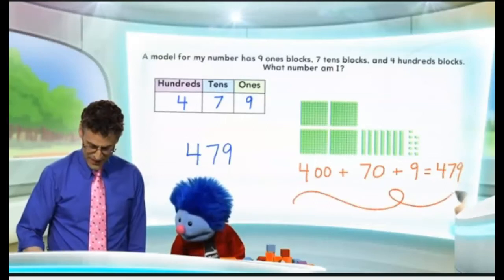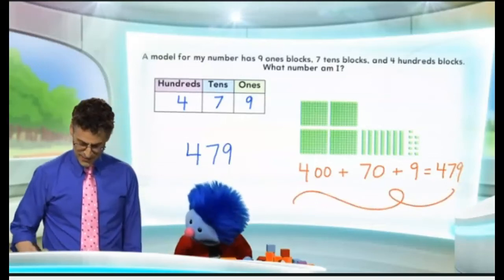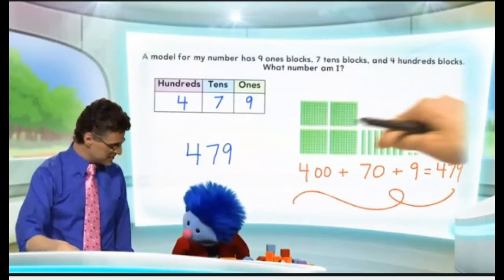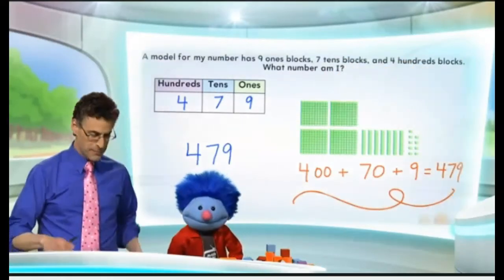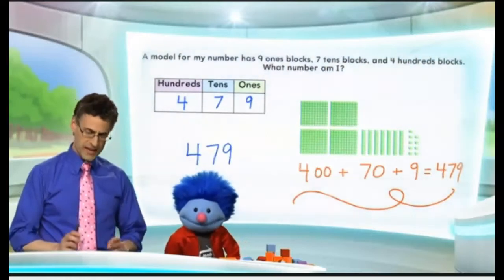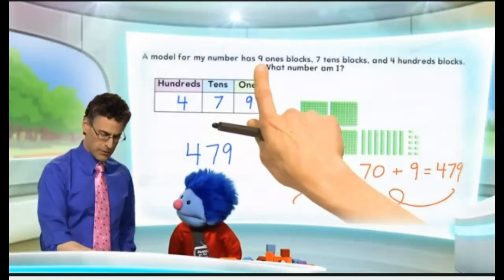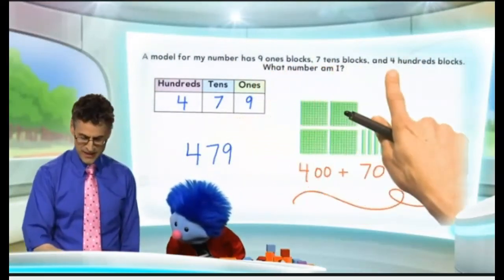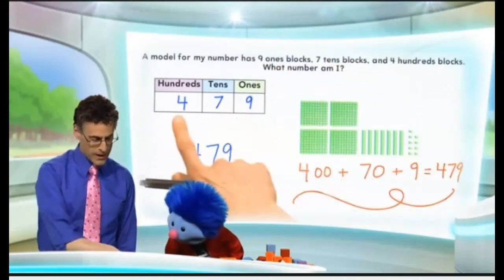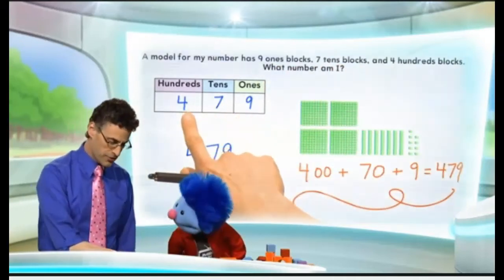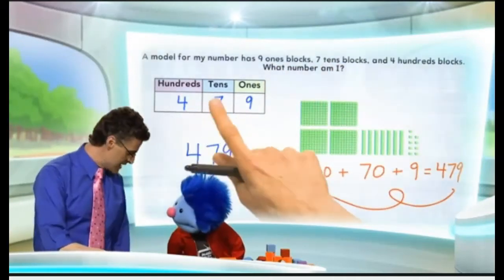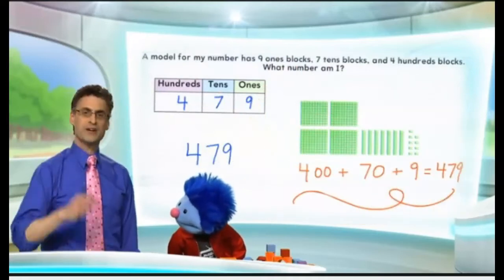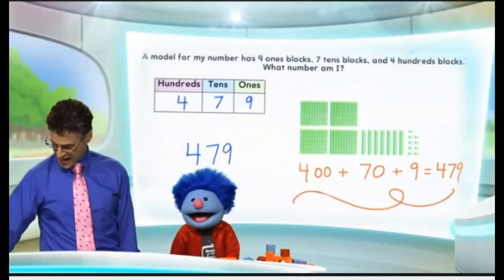So there's kind of a fancy addition sentence that corresponds to using the base 10 blocks. The important thing is, even though we were given the nine ones first and then the seven tens and then the 400s, we have to write them in the right order: hundreds, then tens, then ones. And then we have our number, 479.